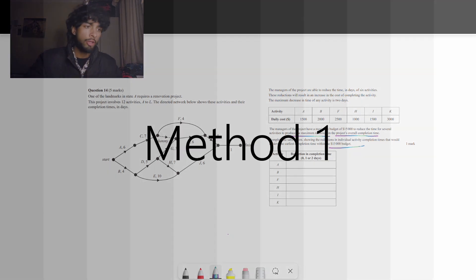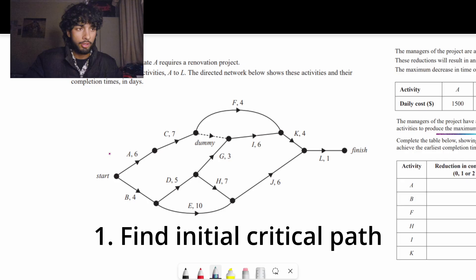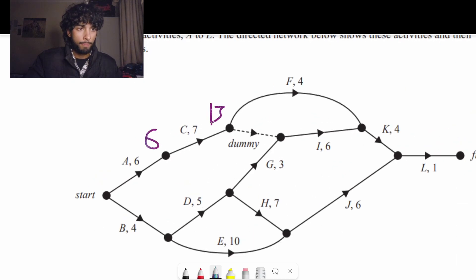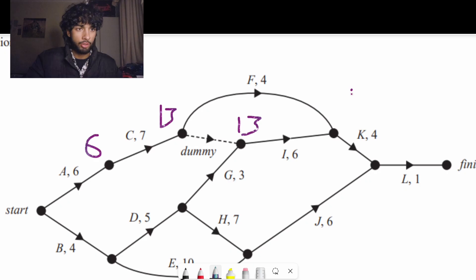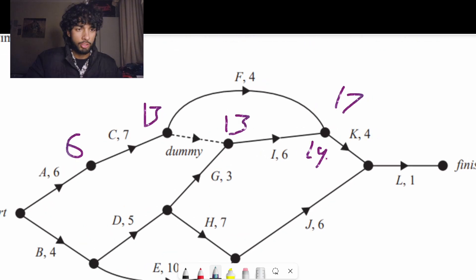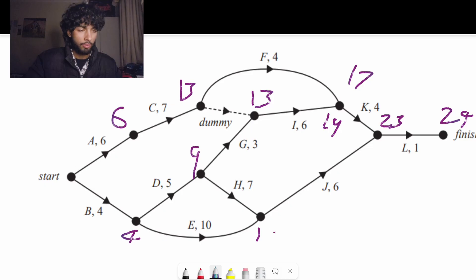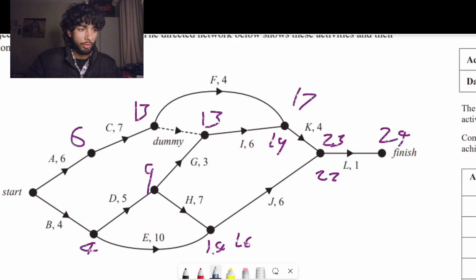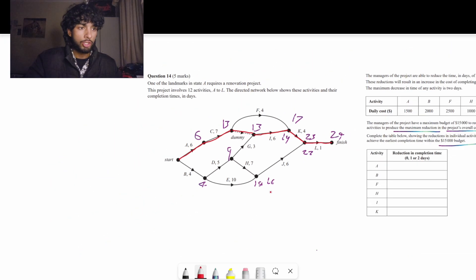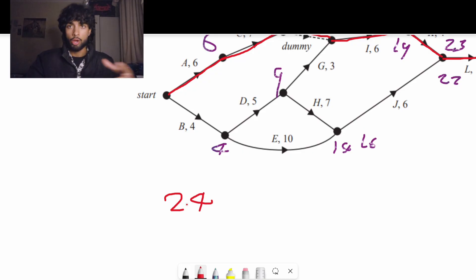They want to have the maximum reduction in the project's overall completion time for that $15,000 budget. Let's go ahead and do method one. So the first step we're going to be doing is finding the critical path. This should be something kind of second nature for you guys. So the critical path looks to go like this here and then using the dummy activity going this way.